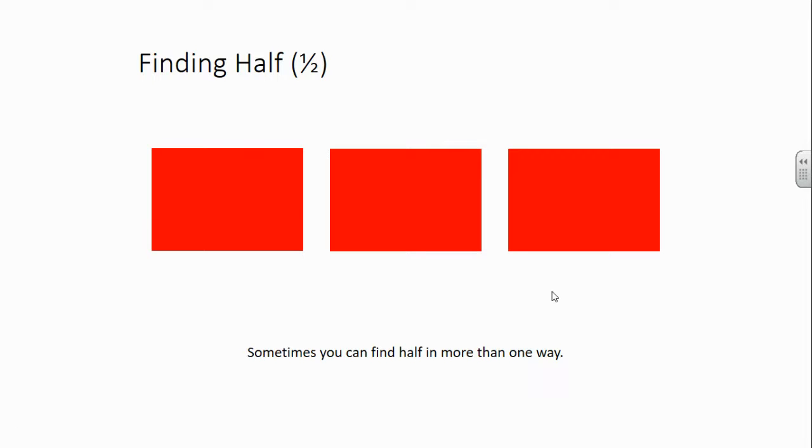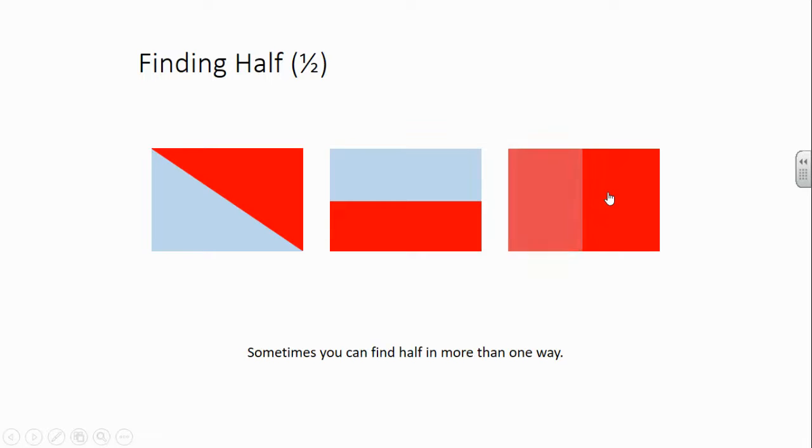Draw three rectangles. And sometimes you can find half in more than one way. See how many ways you can find half of them. Off you go. Let's see what Michelle has done. That's right. I've drawn a diagonal line across and I've shaded in half. I've drawn a horizontal line across, shaded in half. And I've drawn a vertical line and shaded in half.